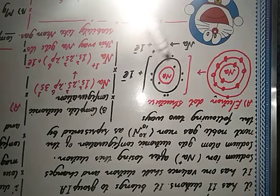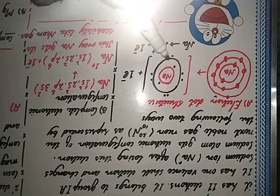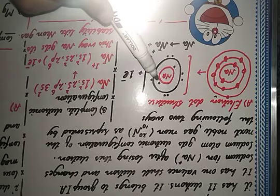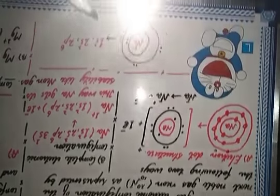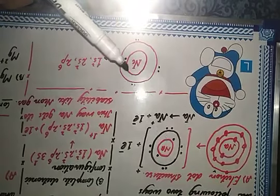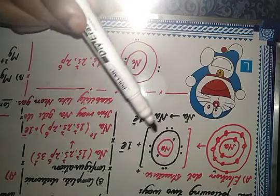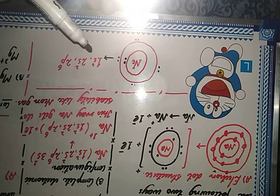In the Lewis dot structure, the sodium cation is represented with two electrons in the K shell and eight electrons in the L shell — two plus eight gives the electronic configuration of neon. If you notice, sodium now has two electrons in the first shell and eight in the second shell, just like neon gas.